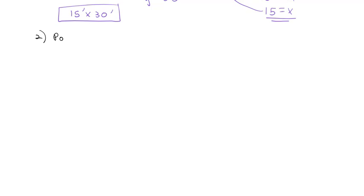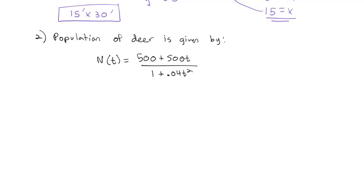Let's say the population of deer in a certain area is given by N(t) equals 500 plus 500t over 1 plus 0.04t squared. What I want to know is when is the population maximized?